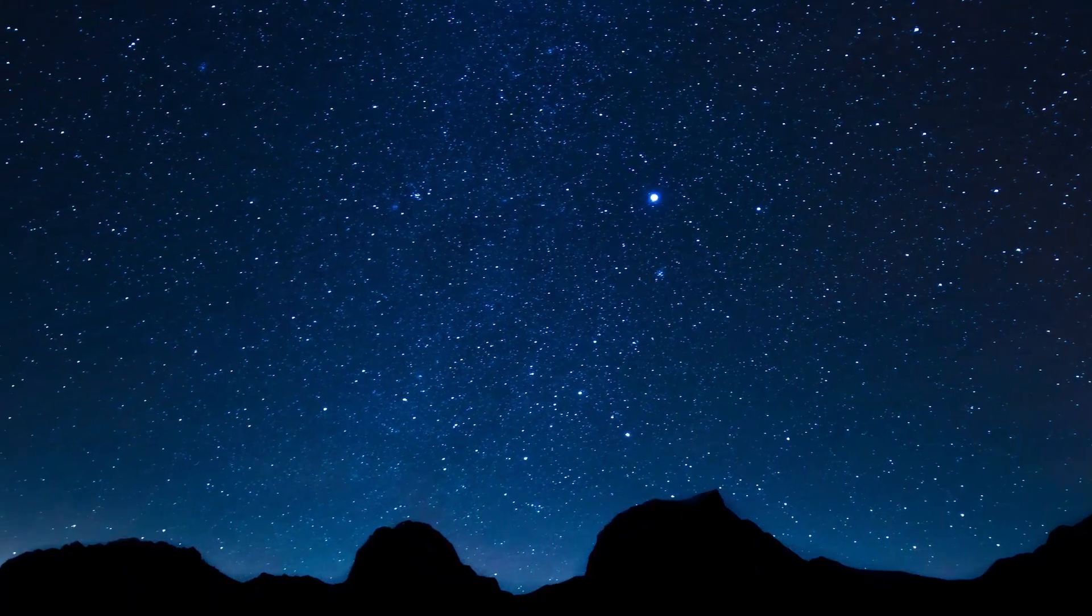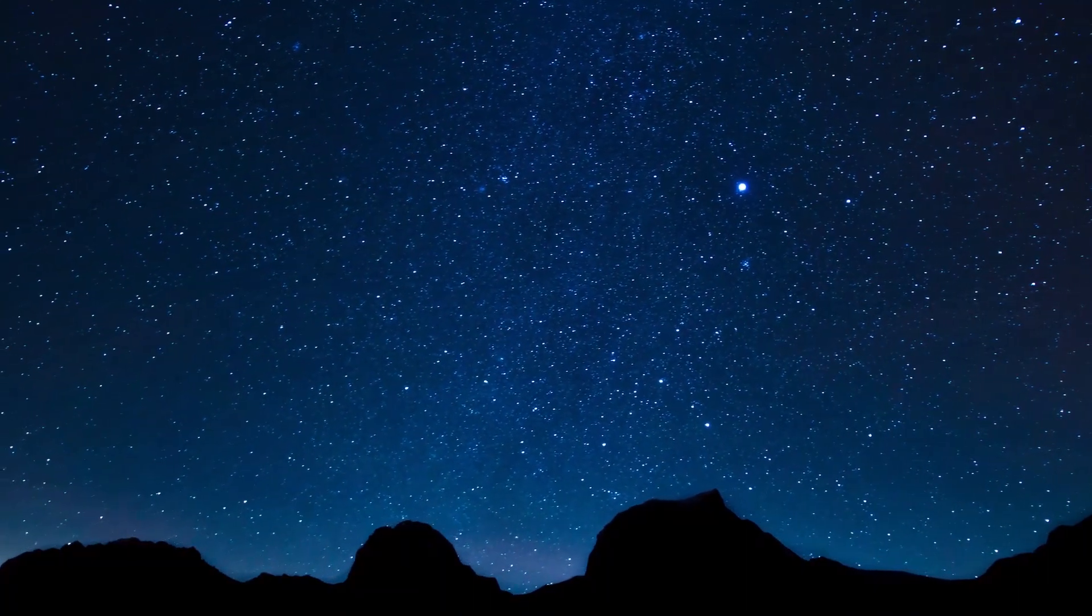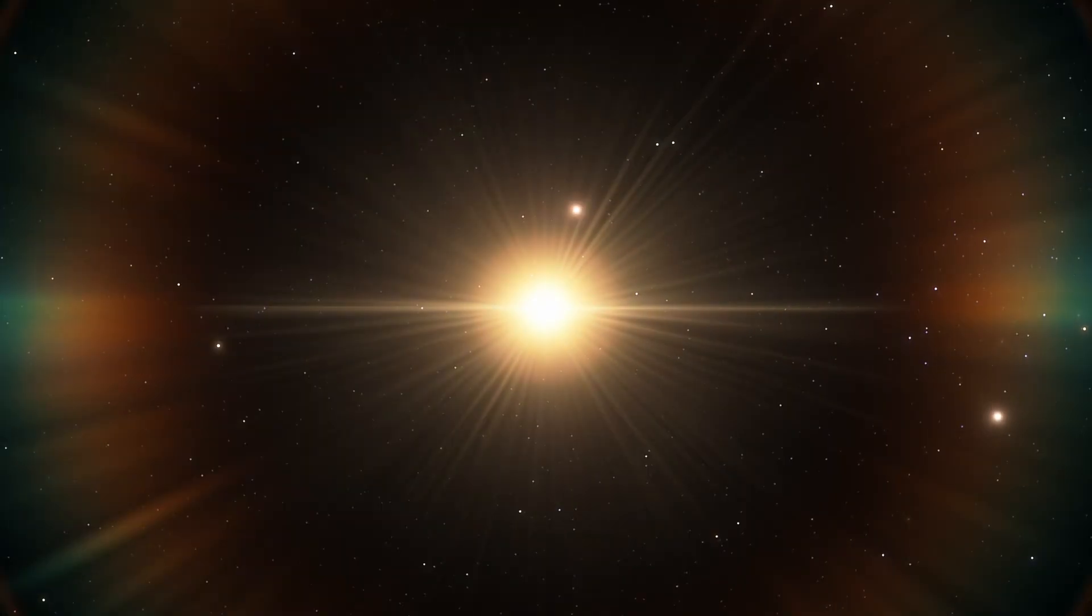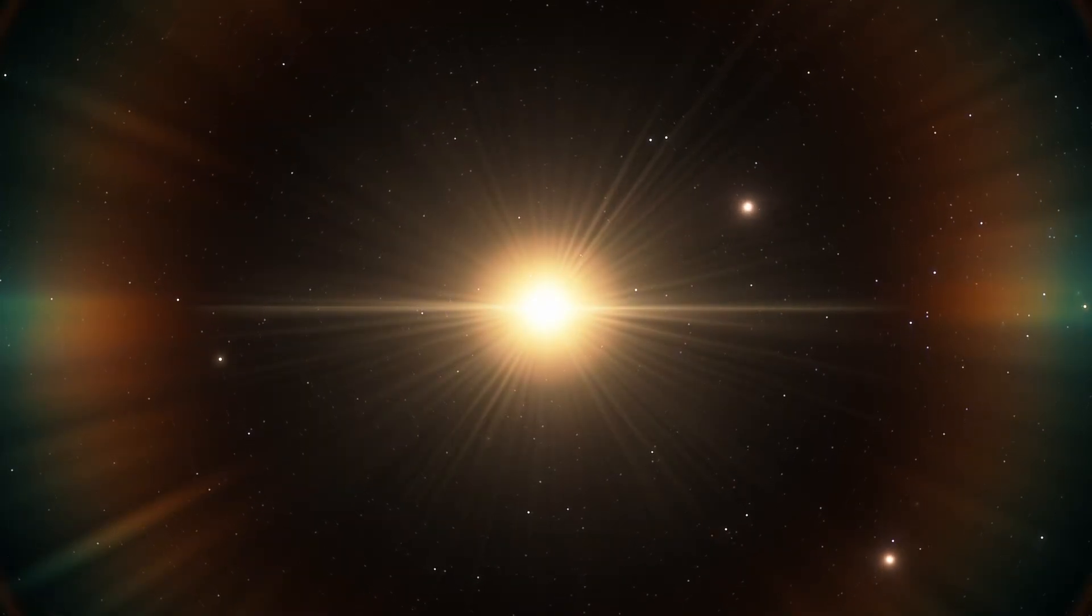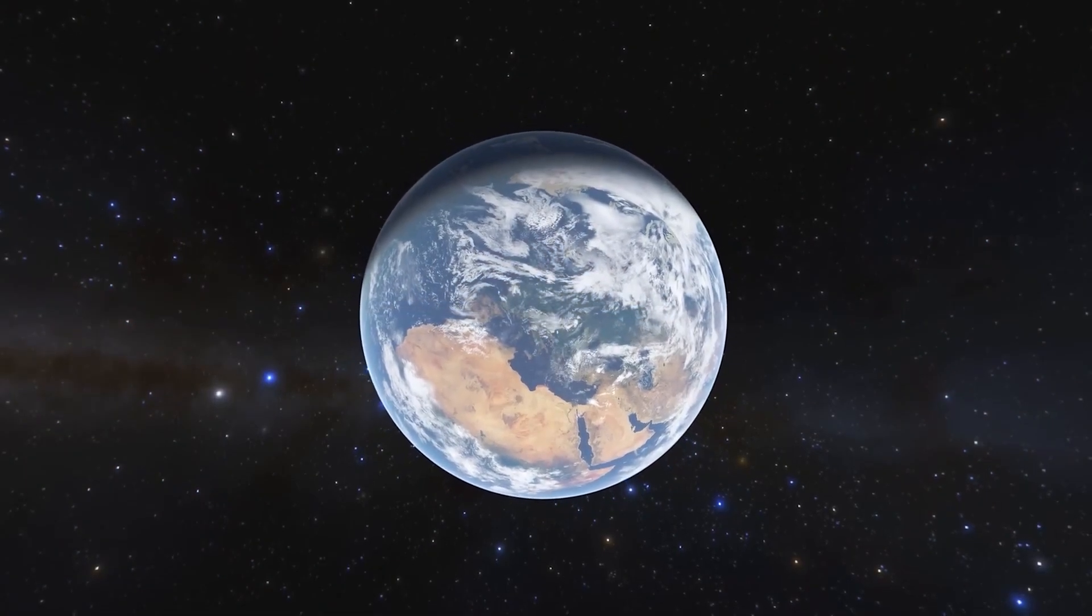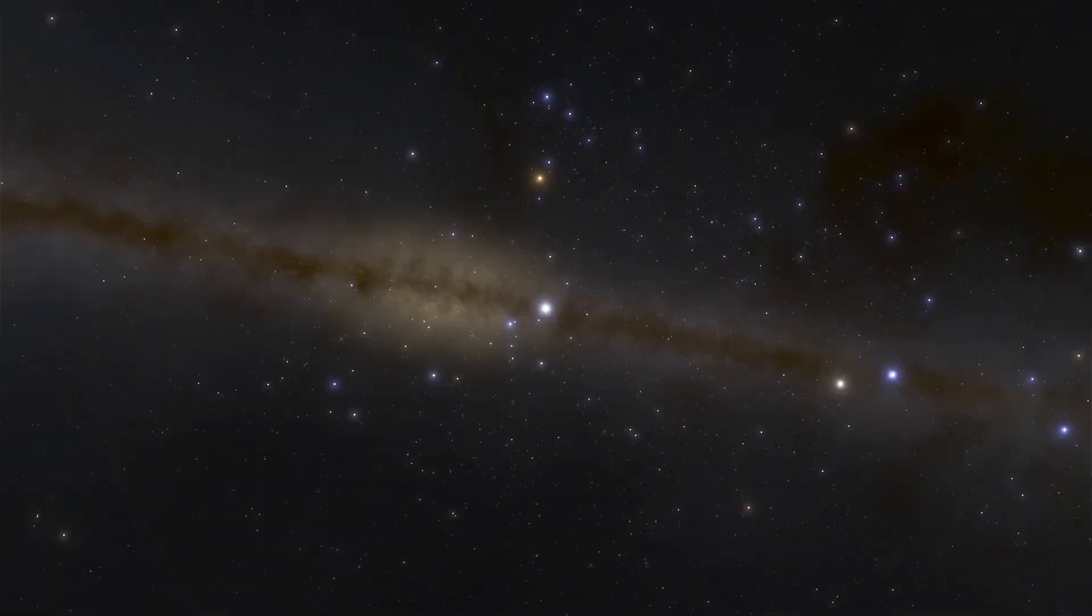The stars in the night sky shine brightly, but we can't see the planets orbiting around them with the naked eye. These planets called exoplanets are not in our solar system and are difficult to observe even with telescopes.